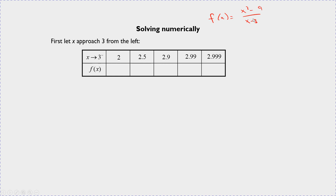When you plug 2 into this function, you get 5. When you plug in 2.5, you get 5.5. If you plug in 2.9, you get 5.9, and so on. You can clearly see that as x gets closer and closer to 3, the function is getting closer and closer to 6. Thus, from the left, the limit of f of x appears to equal 6.